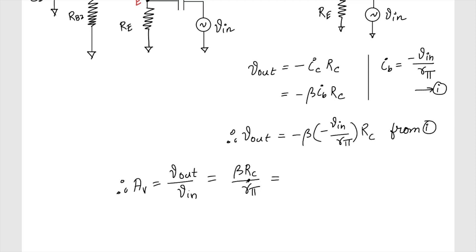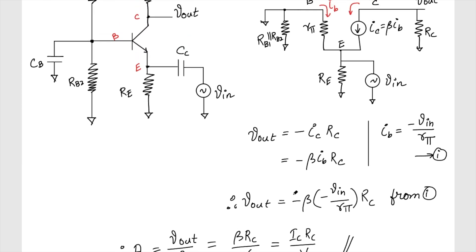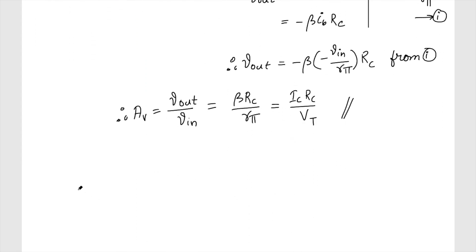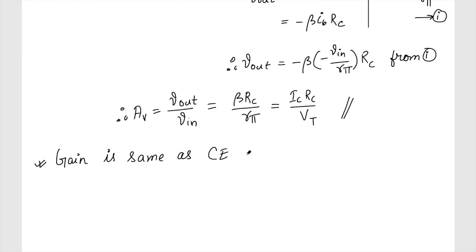Expanding this expression: since Rπ equals VT by IB, IB cancels upward, and beta times IB is IC, so the gain becomes IC times RC by VT. If you look at this expression, the magnitude of the gain is the same as the common emitter amplifier. The only difference is the phase — in the common base amplifier the phase is non-inverting (positive), whereas the CE amplifier inverts the signal.